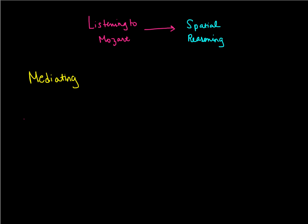We have our general relationship here: listening to Mozart and how that affects spatial reasoning. There's some other variable that listening to music changes, which then leads to a change in spatial reasoning. When you're listening to music, one of the things that changes is your mood or arousal. When you're listening to upbeat, nice music, your arousal goes up and your mood improves.